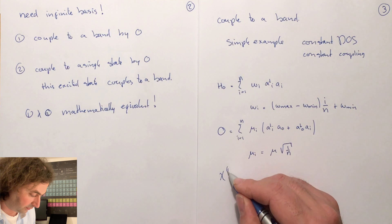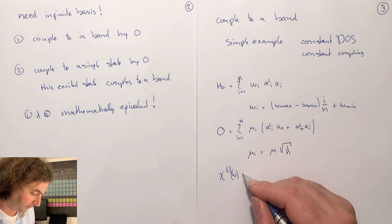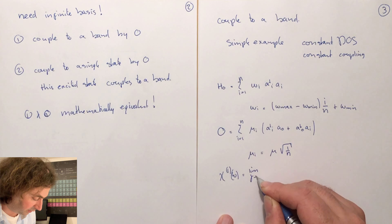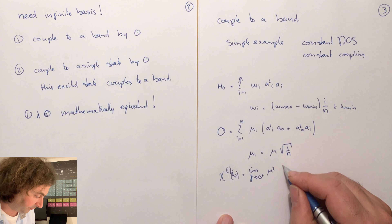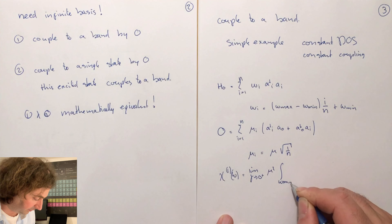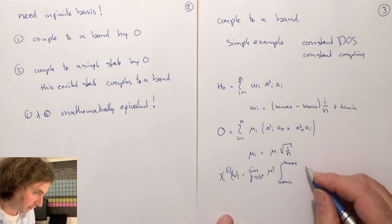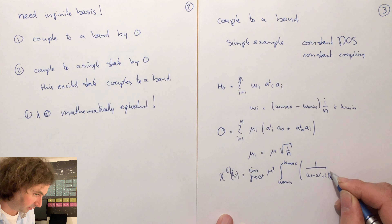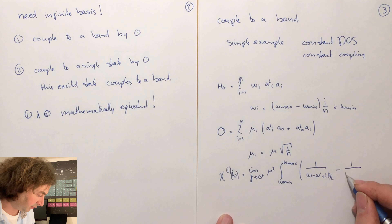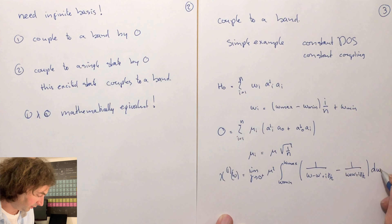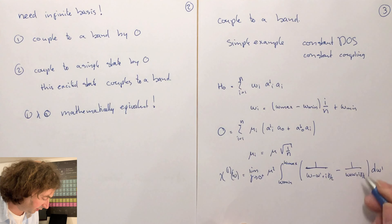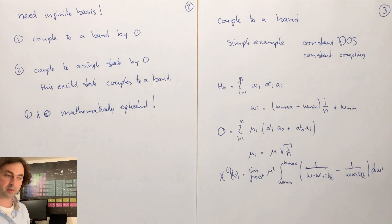With this we can calculate our susceptibility as the limit of γ → 0⁺ of μ² times the integral from ωmin to ωmax of [1/(ω − ω′ + iγ/2) − 1/(ω + ω′ + iγ/2)] dω′, where we add a small imaginary part to make sure that all branch cuts are well defined and we know where the poles are when we do the integration.